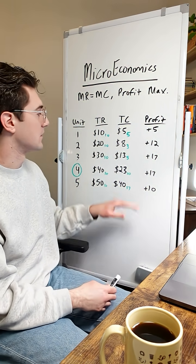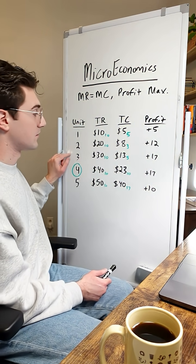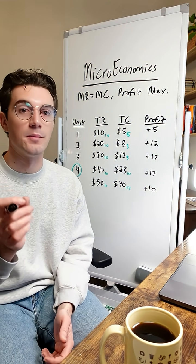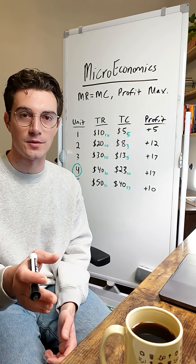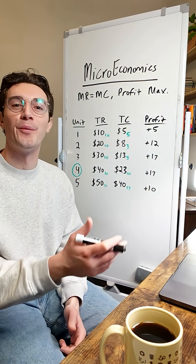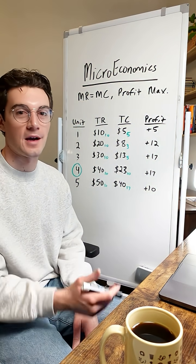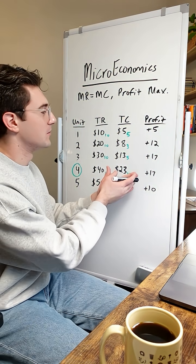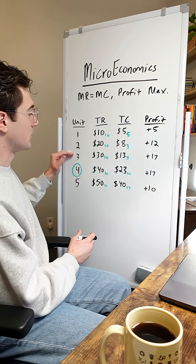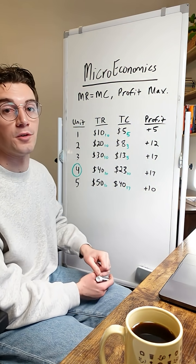The third thing to note: couldn't we have stopped at three units since profit was also $17 there? Sure, but for the sake of your exam, firms want to output as many units as possible — they have nothing to lose outputting that fourth unit. Maybe the next unit brings more marketing through word of mouth. Just understand we output as many units as possible. At three units, marginal revenue was still greater than marginal cost, so there was something to gain from producing one more unit.